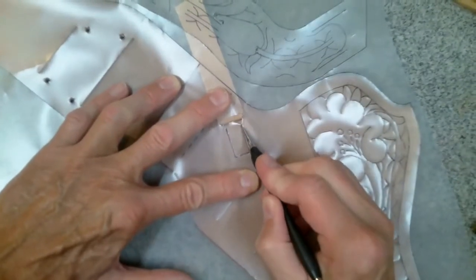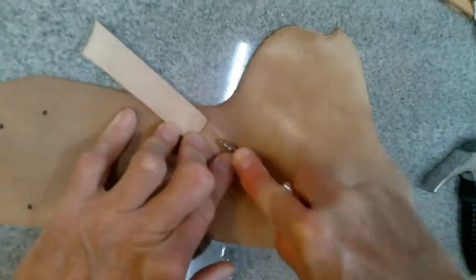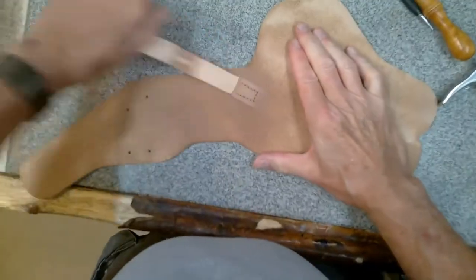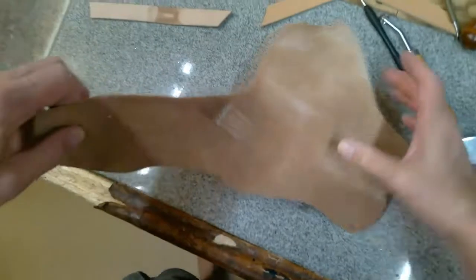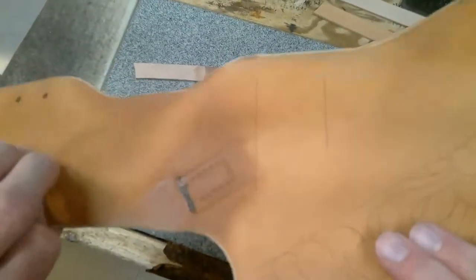Next, I mark the stitching holes while I have the strap in place to support the leather. Remove the strap, wrap the holster in plastic, and allow to case for tooling and shaping later.